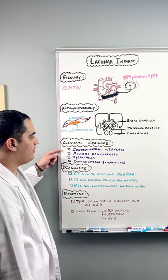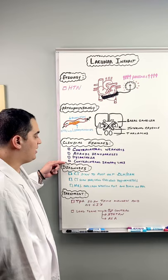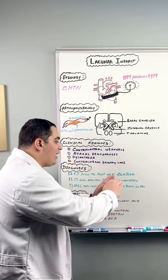What would be the symptoms if these structures were damaged? It can lead to pure motor symptoms like contralateral weakness, ataxic hemiparesis, dysarthria, or pure sensory symptoms like contralateral sensory loss.